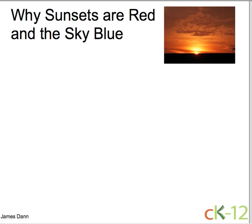Why are sunsets red? Why is the sky blue? Well, it all starts with the composition of our atmosphere. Our atmosphere scatters light proportional to the frequency to the fourth power.